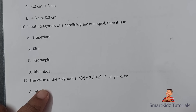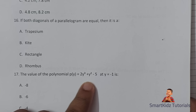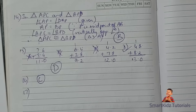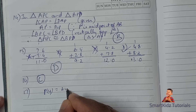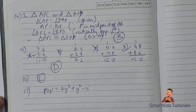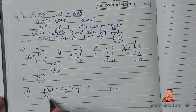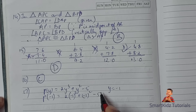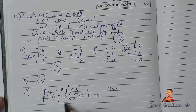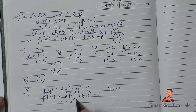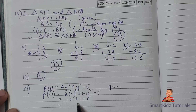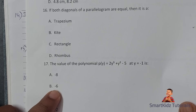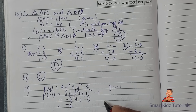Question 17: The value of p(y) = 2y³ + y² − 1 at y = −1. Substituting: 2(−1)³ + (−1)² − 1 = 2(−1) + 1 − 1... wait, re-reading: p(y) = 2y³ + y² − 5. So: 2(−1) + 1 − 5 = −2 + 1 − 5 = −6. So B, −6, is our correct choice.